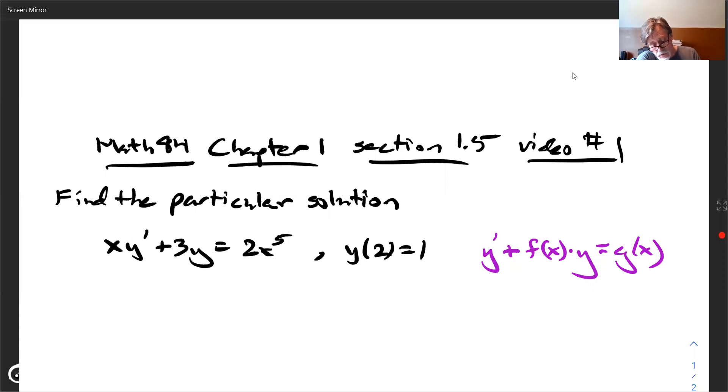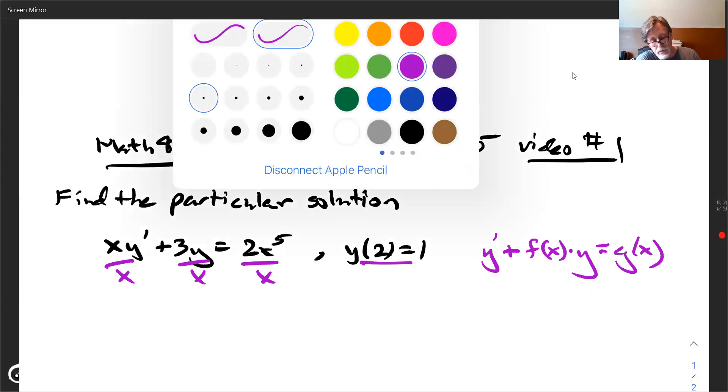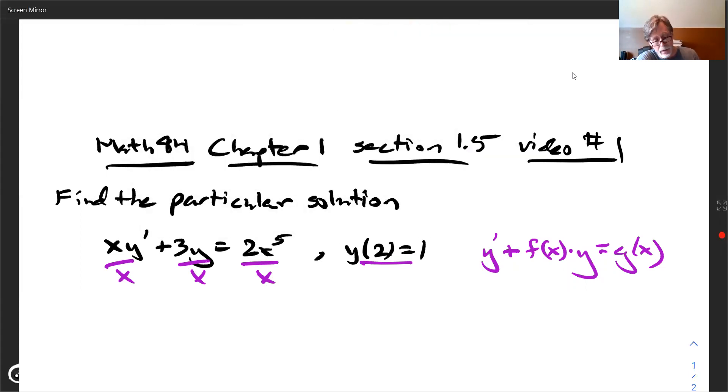And also notice we do have an initial condition. So once we're done, we got to find c and then wrap it up and say, there you go, there's our solution. So the first thing we should do is get rid of that x out in front because when we do this procedure, we need that to be so. We need it out of the way. We end up with y prime.